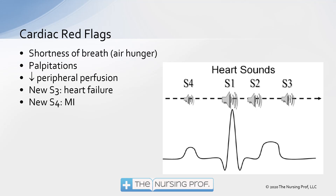The other heart sound to listen for is a new S4. An S4 is usually rather soft and it occurs before S1. So what we're going to hear sounds like lub-dub, lub-dub. If you ever learned these sounds, you probably learned them with mnemonics like 'Kentucky' and 'Tennessee.' What works best for me is to think about what's actually happening. With an S4, the pattern sounds like 'a stiff wall, a stiff wall, a stiff wall' — and that tells you what's wrong.